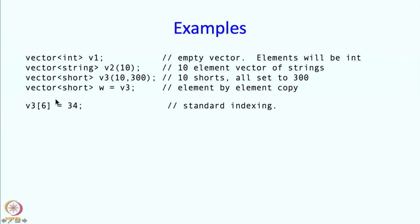They can do indexing. v3 is this vector that we defined, and I can set the sixth element to be 34. I can also look at any element inside that. Here is a more interesting operation. I can push back an element. This is going to append 22 to v3. Originally v3 had length 10 and it contained 10 300s. But now it is going to contain an extra element, the 10th element, which is going to be 22.